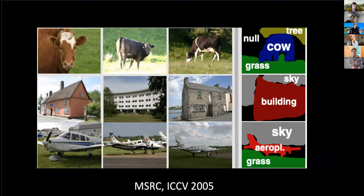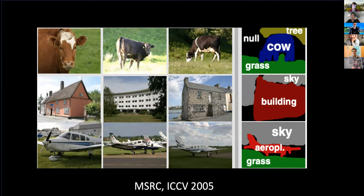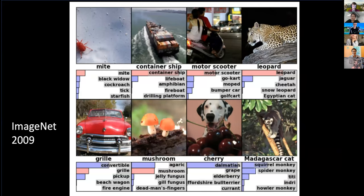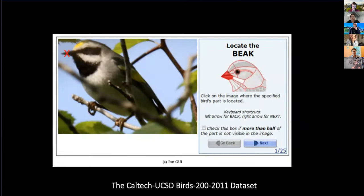Things began to take off with labeling and datasets. The MSRC dataset was one of the early driving ones, with things like cows in there, beginning this effort to label the world — animals were just as interesting as a house or a plane. ImageNet continued that in 2009, with people recognizing animals and mushrooms, but animals weren't particularly special. Then the interest coming out of Caltech and UCSD in fine-grained classification really drove people to start thinking that animals were a special class deserving special study.